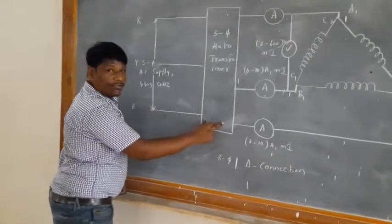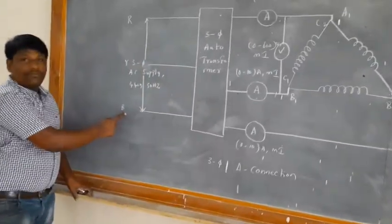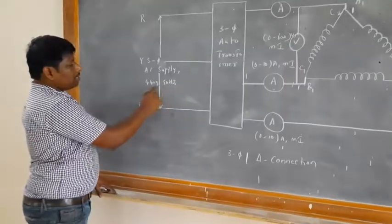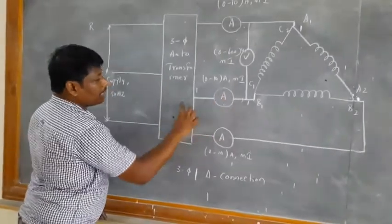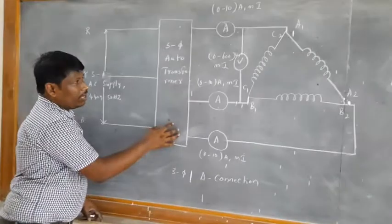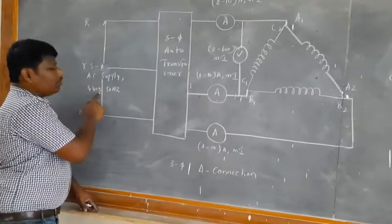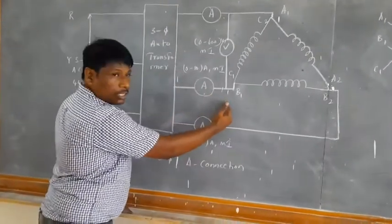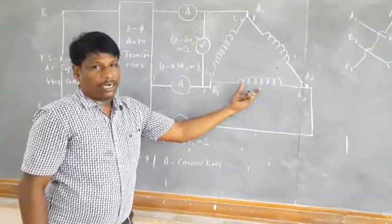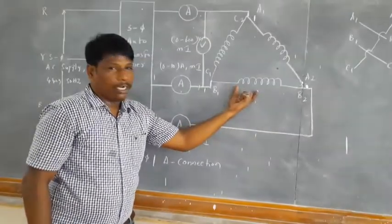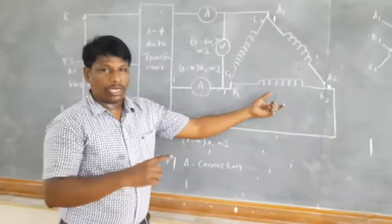This setup represents a three-phase autotransformer to which three-phase electrical input is given. R, Y, B represent the three-phase electrical supply of 440 volts at 50 Hz. The output voltage of the autotransformer can be varied from 0 to 440 volts. Initially the autotransformer is kept at 0 and voltage is gradually increased to the rated value of 440 volts. The load connected in delta is initially kept at 0, with a maximum loading condition of 10 amperes.